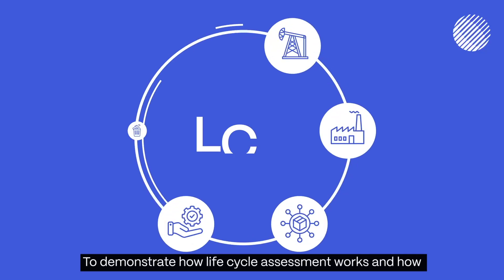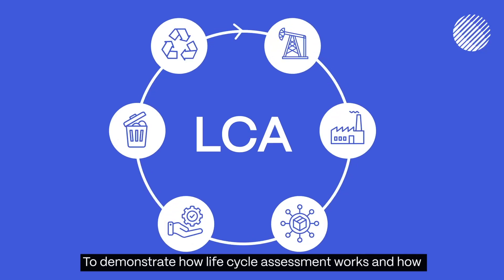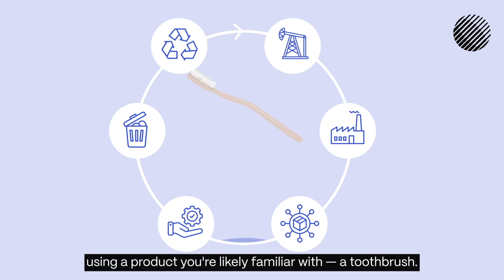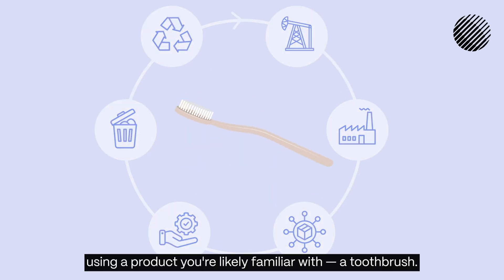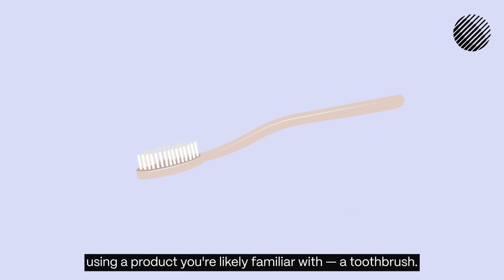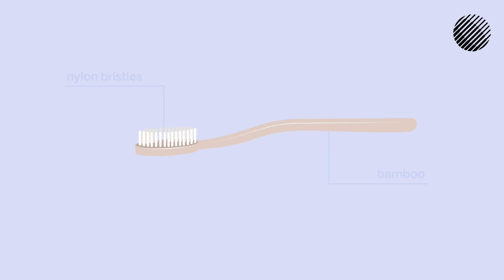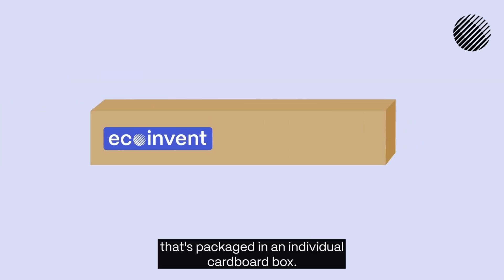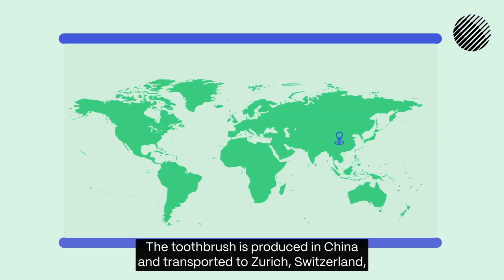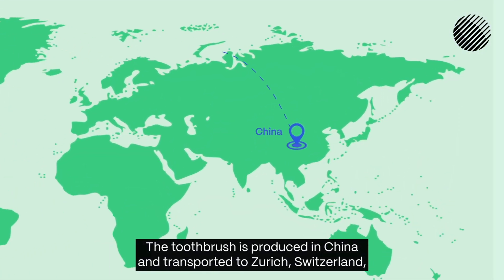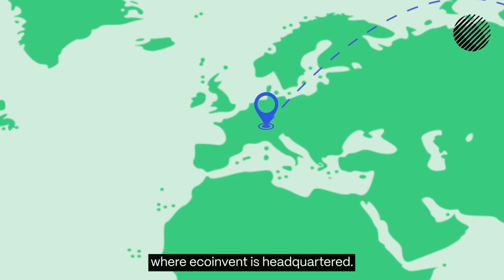To demonstrate how life cycle assessment works and how the EcoInvent database can be applied, we'll present a simple case study using a product you're likely familiar with: a toothbrush. For this example, we'll use a bamboo toothbrush with nylon bristles that's packaged in an individual cardboard box. The toothbrush is produced in China and transported to Zurich, Switzerland, where EcoInvent is headquartered.